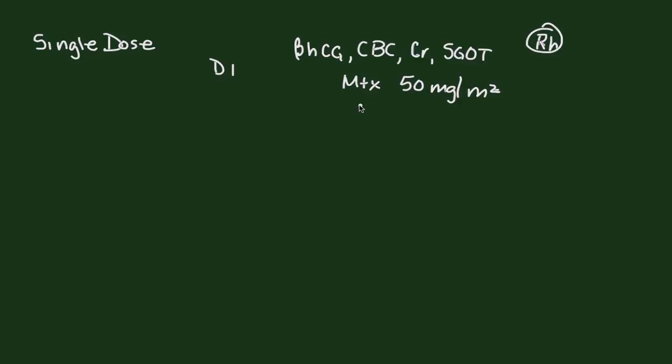So the day that the patient gets her methotrexate, that is day one. On day four, you get a beta-HCG. And then on day seven, the patient gets a beta-HCG, a CBC, a creatinine, and an SGOT. We consider these really more safety labs just to make sure that the patient continues to do well and hasn't had any serious complications from her methotrexate. The importance of getting the quantitative beta-HCGs is to determine success.